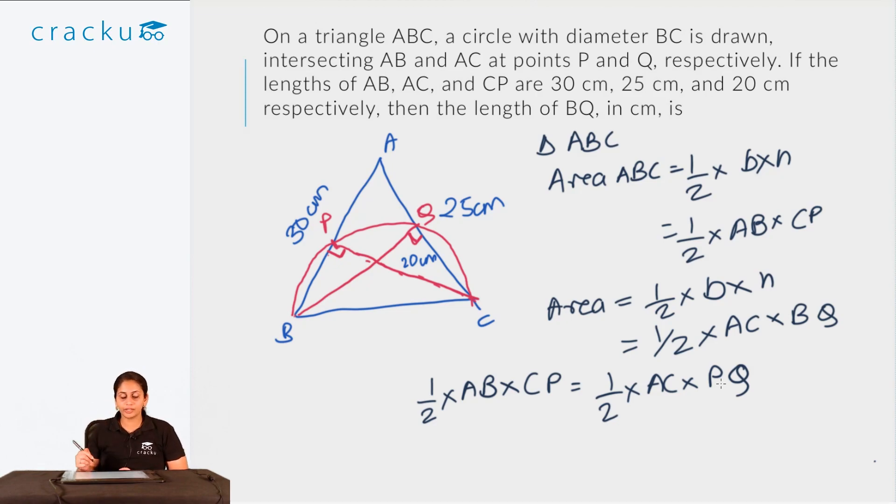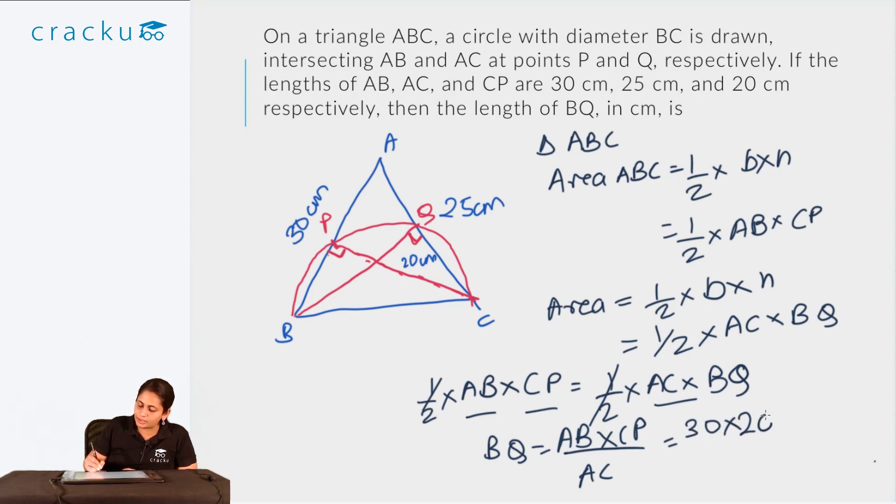Now if I use these basic values, I can see that half cancels. I know the value of AB, I know the value of AC, and I know the value of CP. So I can easily calculate the value of BQ. So what would be BQ? BQ would be AB times CP divided by AC. So this is AB equals 30, CP is 20, and AC is 25. So 6 and 4. So this is 24 centimeters. So BQ would be 24 centimeters. So the answer is 24 centimeters.